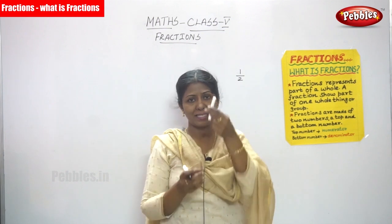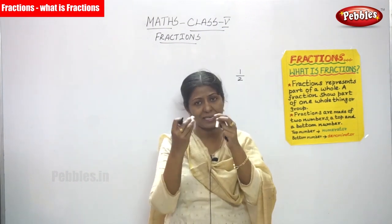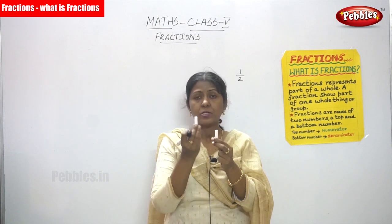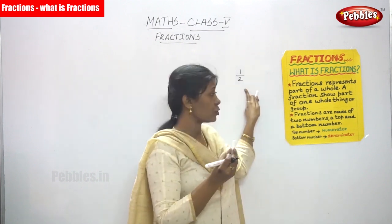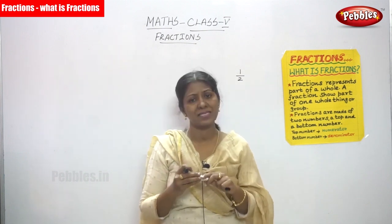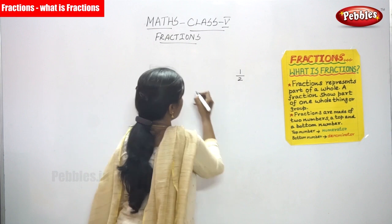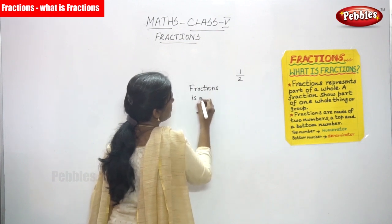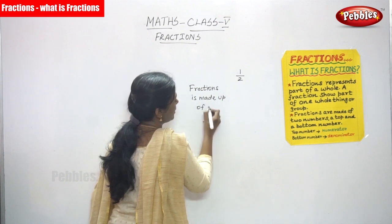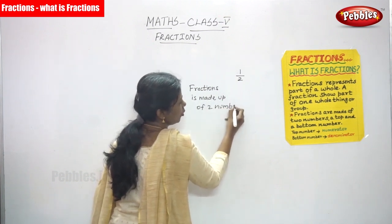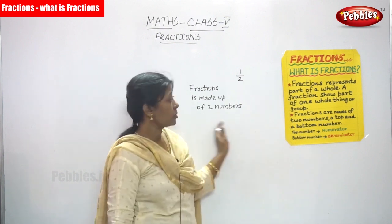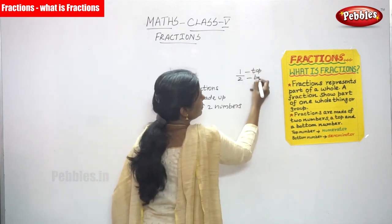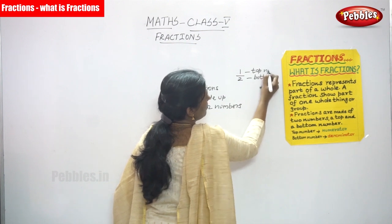Before that, you look at the chocpist — it is a single chocpist, a whole thing. After that I cut it into equal parts. Then you can say it is half a chocpist — and that is called a fraction. This example is 1 by 2. Fractions are made up of two numbers — a top number and a bottom number.